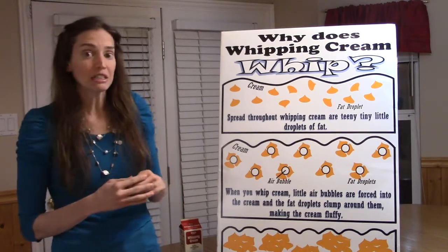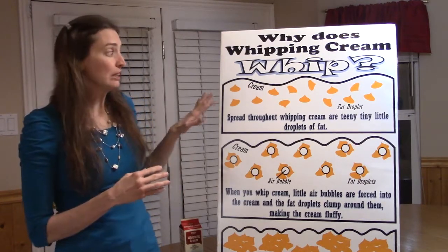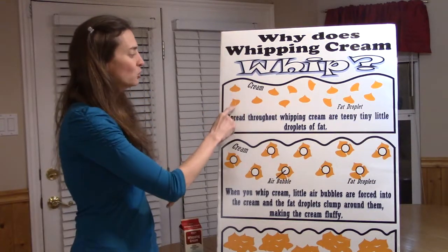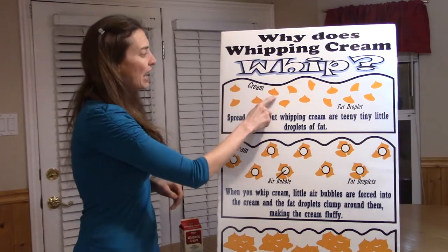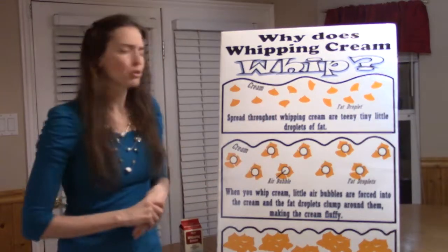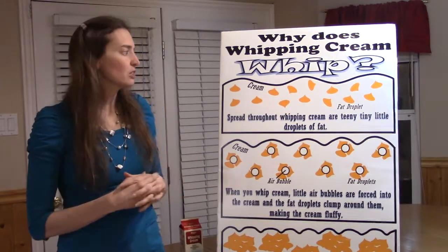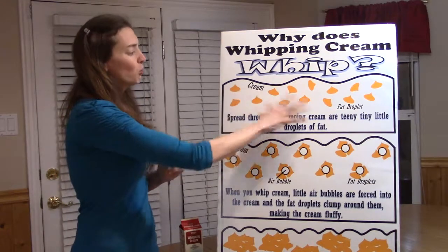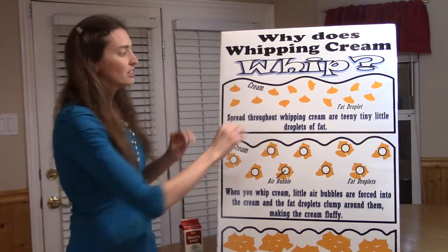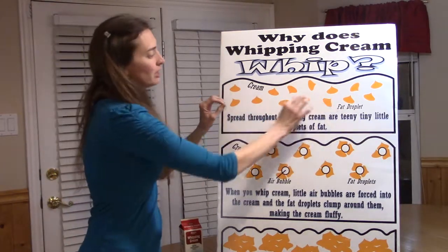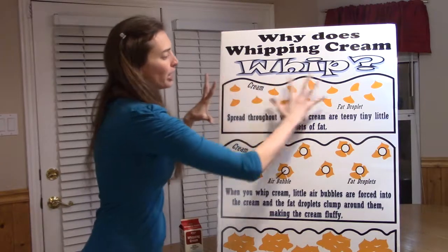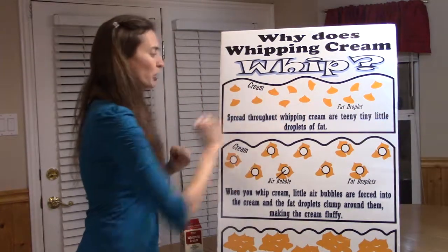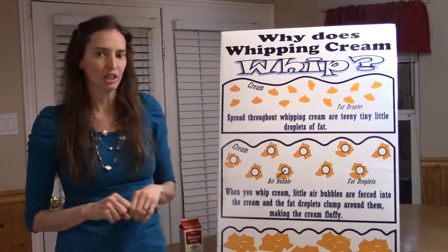Whipping cream is made of a few different things. Mostly it's actually made of water. It also has little droplets of fat, and there are a few other things in there too — some proteins, some milk sugars — but mostly it's water and fat. These little fat droplets are evenly spread out throughout the cream, and this is what it looks like in its liquid form.